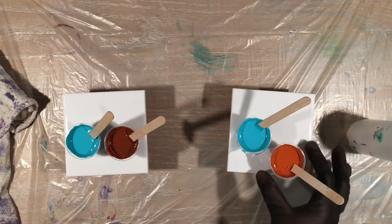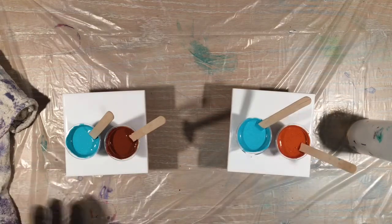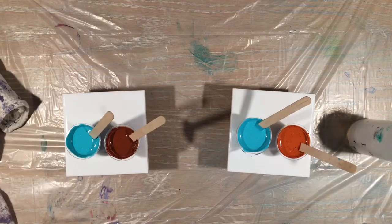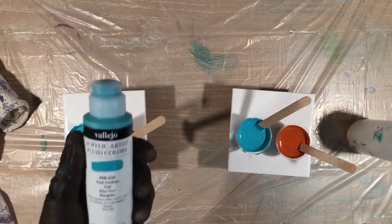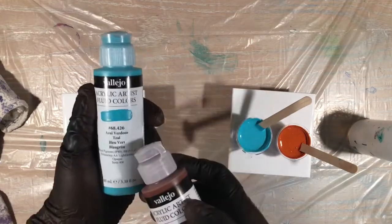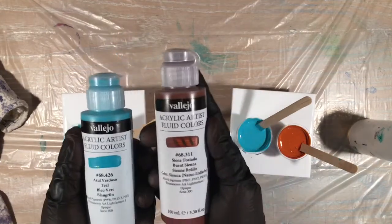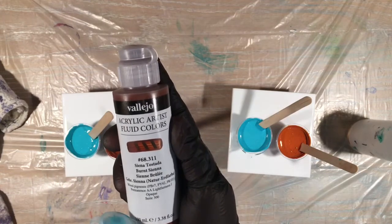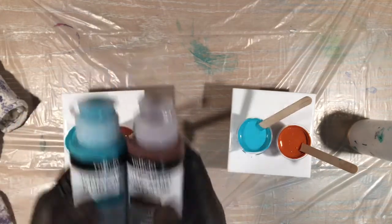Now I tried to match the color as close as possible. So for the Vallejo, I have teal. And I also have Burnt Sienna.